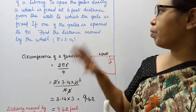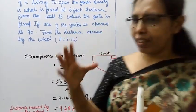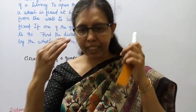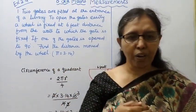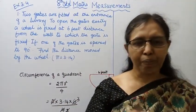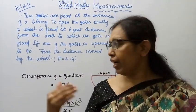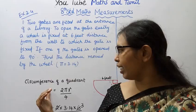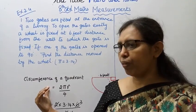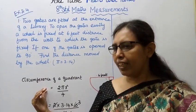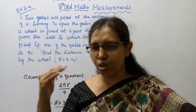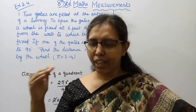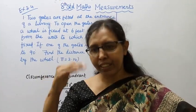Alternatively, you can apply the arc length formula: arc length equals (theta / 360) × 2πr, where theta is the angle.